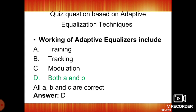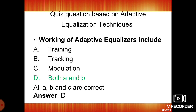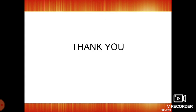Here is a practice question based on adaptive equalization techniques: The working of adaptive equalization includes — A: training, B: tracking, C: modulation, D: both A and B. The modes used are training and tracking, so the correct answer is D, both A and B are correct.